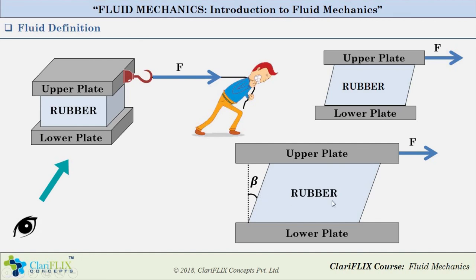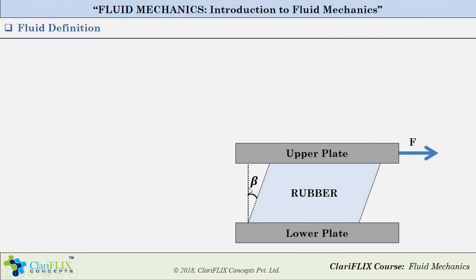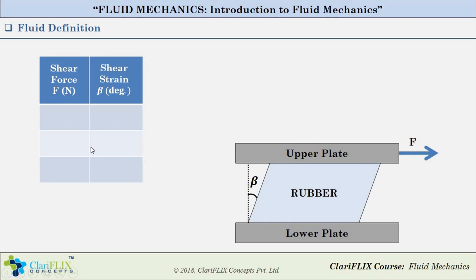The rubber will remain in this deformed shape until the force F is acting on the plate. The moment we release this force F, the rubber will partially or fully regain its original shape. The applied force is also known as a shear force, since its line of action is parallel to the upper plane of the rubber. The angle of deformation is directly proportional to the amount of force applied on the upper plate — more the force, more the deformation.